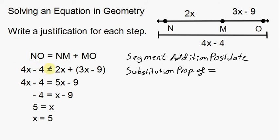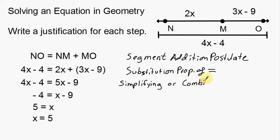Going from line 2 to line 3: the 4x minus 4 on the right doesn't change, but on the left we now have 5x minus 9. This isn't necessarily a property — it's what we call combining like terms. We took the 2x and the 3x and added them together to get 5x.